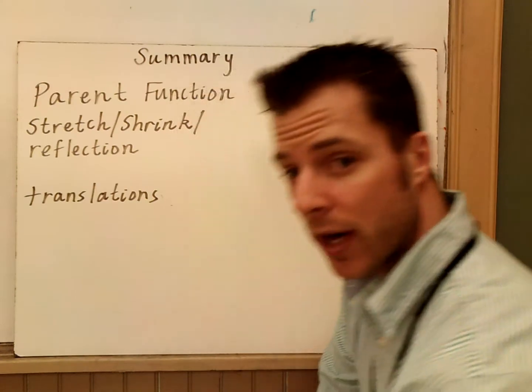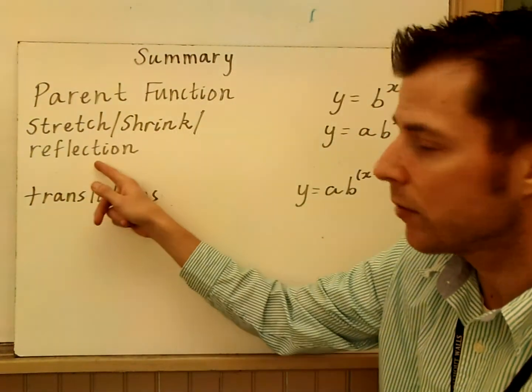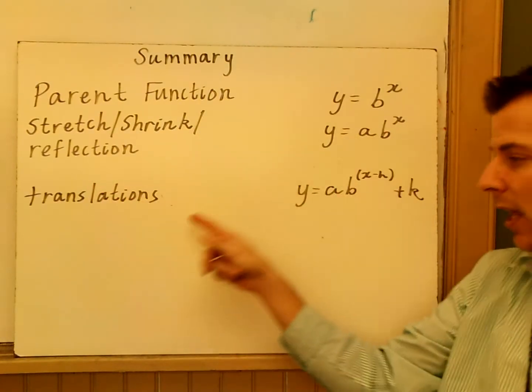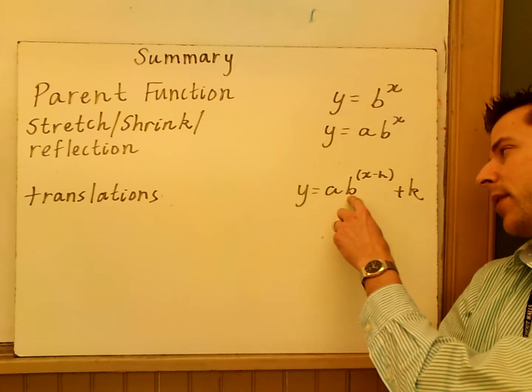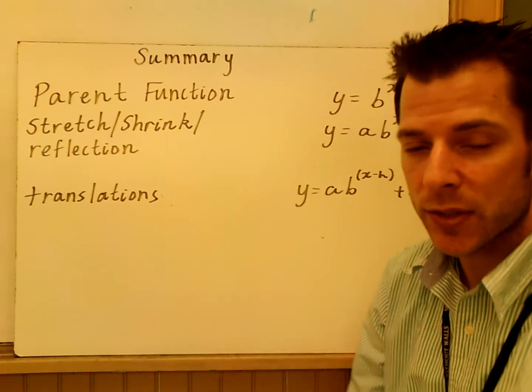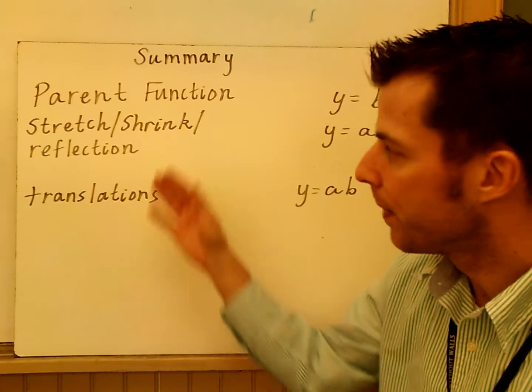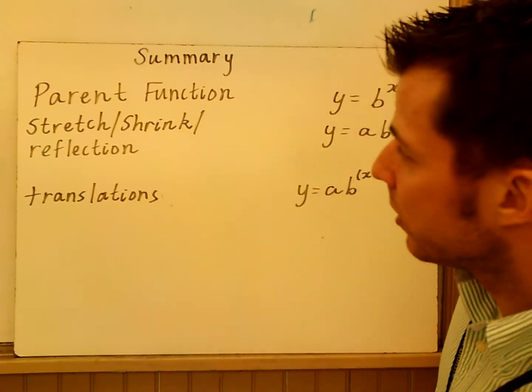In summary, with the graphing, you've got the parent function, Y equals B to the X. If you stretch, shrink, or reflect the graph, it's going to be Y equals AB to the X. And when you add your translations, the function becomes Y equals AB to the X minus H plus K. So that's the full equation, full exponential equation there. That's just a summary of what each of these, the things we've talked about and what their respective equations look like.